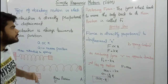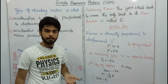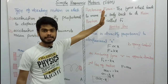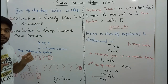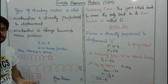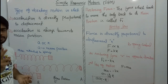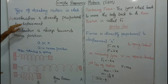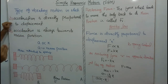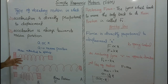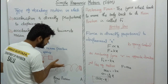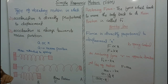So, simple harmonic motion — on this channel we will talk about SHM. So what is simple harmonic motion? First of all, we need to understand this. This is a type of vibratory motion in which we have two things: one is that acceleration is directly proportional to displacement, and the second is that acceleration is always directed towards the mean position.